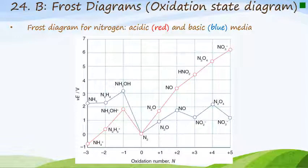Here is an example of a Frost diagram for Nitrogen. The red curves represent the oxidation states of Nitrogen in acidic medium, and the blue curves represent the oxidation states of Nitrogen in basic medium. The potentials will be given to you. An example at the end of the theory will show how to construct this diagram from a Latimer diagram — it requires careful thought and construction of the graph.